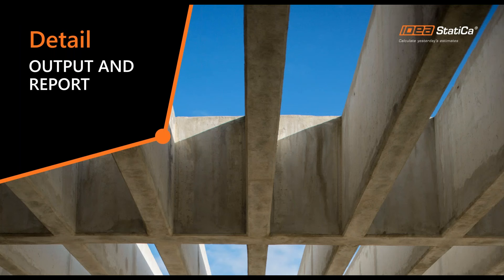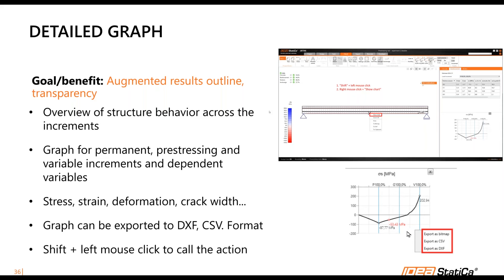Improvements to outputs and reports: the first improvement is graph printing — you click a point on the mesh and print out a graph where the horizontal axis shows increments of prestressing, permanent, and variable loads, and the vertical axis shows variables like stress tensor, deformation, or crack width. You can clearly see where behavior is linear or non-linear, and the graph can be exported to DXF or CSV format.